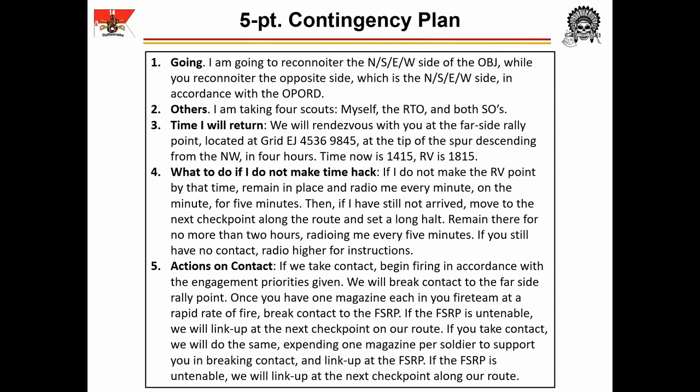'If we take enemy contact, begin firing in accordance with the engagement priorities given. We will break contact to the far side rally point. Once you have expended one magazine each in your fireteam at a rapid rate of fire, break contact to the far side rally point. If the far side rally point is untenable, we will link up at the next checkpoint on our route. If you take contact, we will do the same — expending one magazine per soldier to support you in breaking contact and link up at the far side rally point.' The team leader can also designate linkup at the release point or ORP, but should always establish a primary course of action in case communications fail; he can change this plan via FM during actions on.